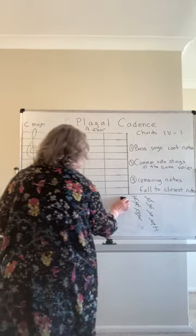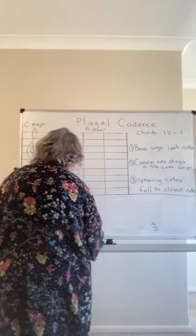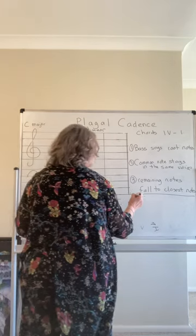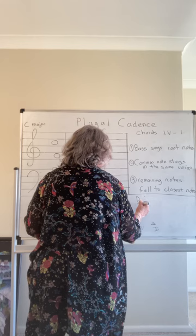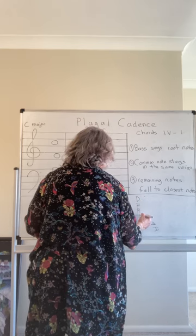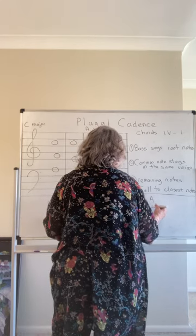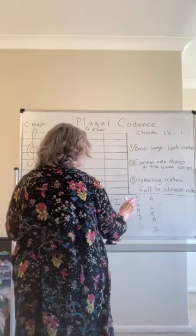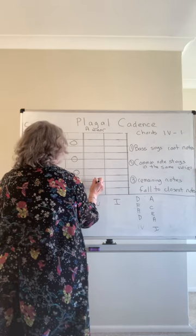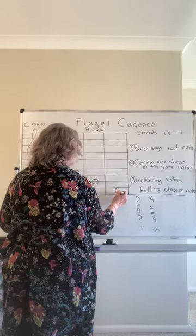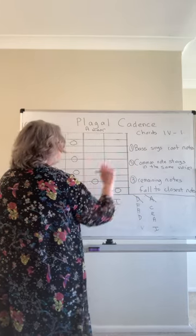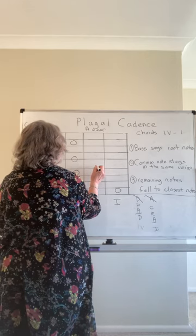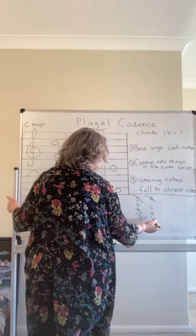Now let's look at A minor. Chord four going to chord one. In A minor, chord four is built on D — A B C D — so we build a D triad and double the D. Going to chord one, which is A C E, doubling the A. The bass takes the root note D, going down to A to give us room above. The common note is A, which we'll put in the tenor.